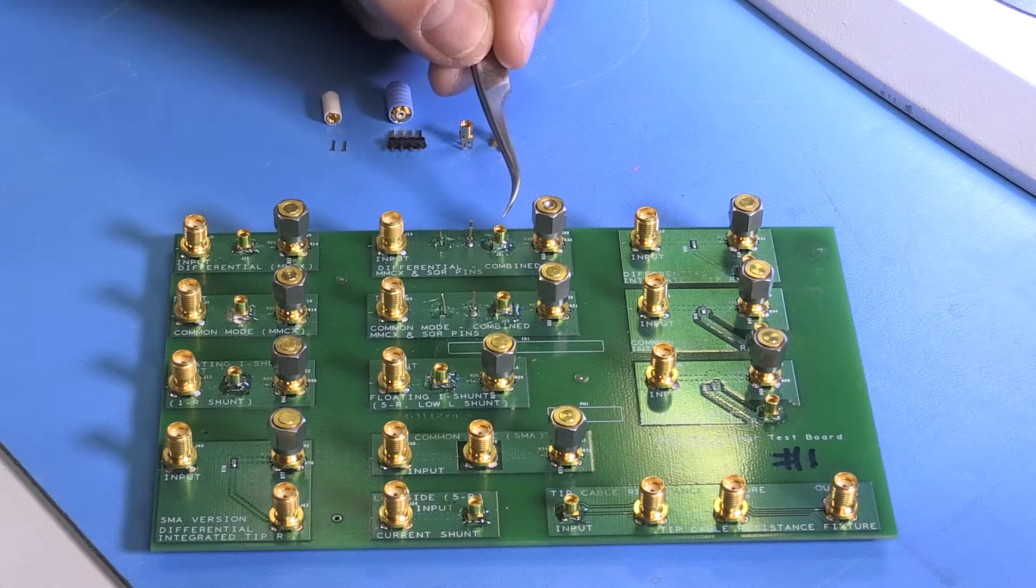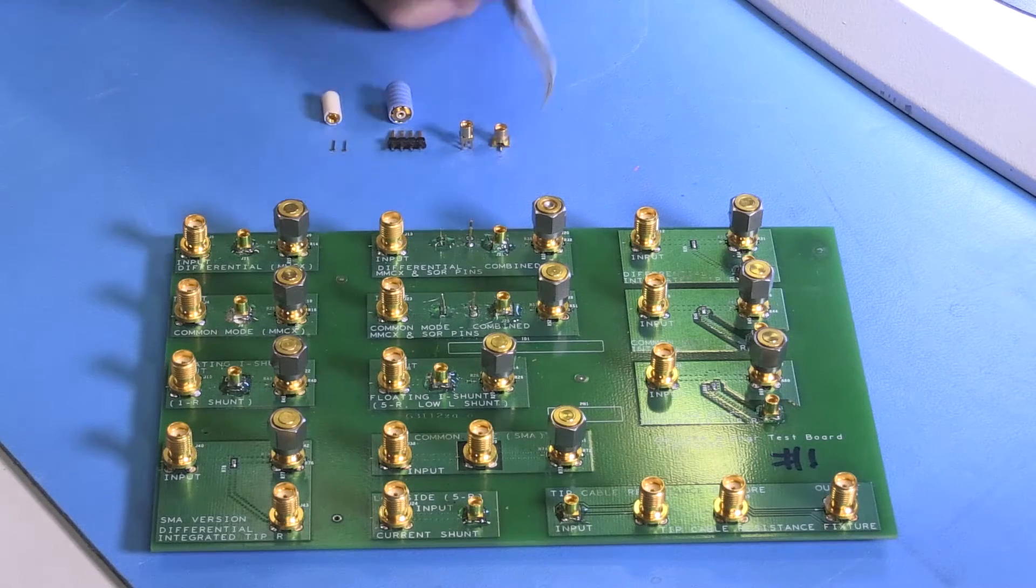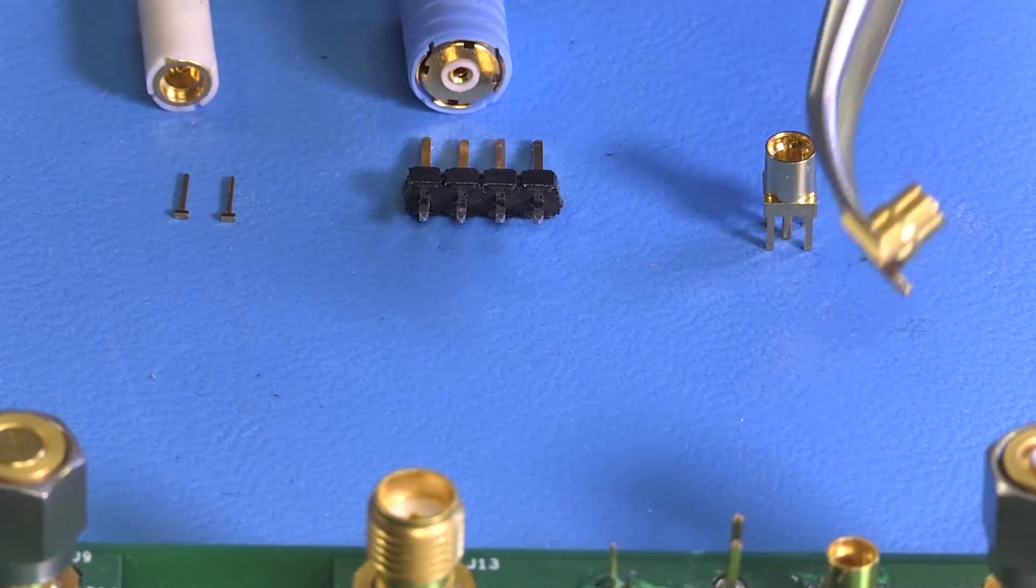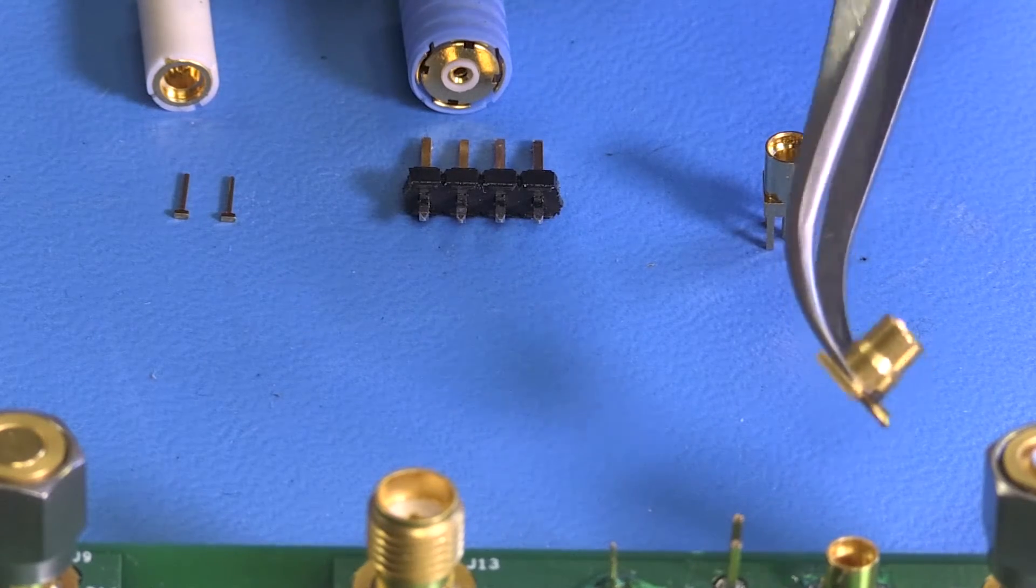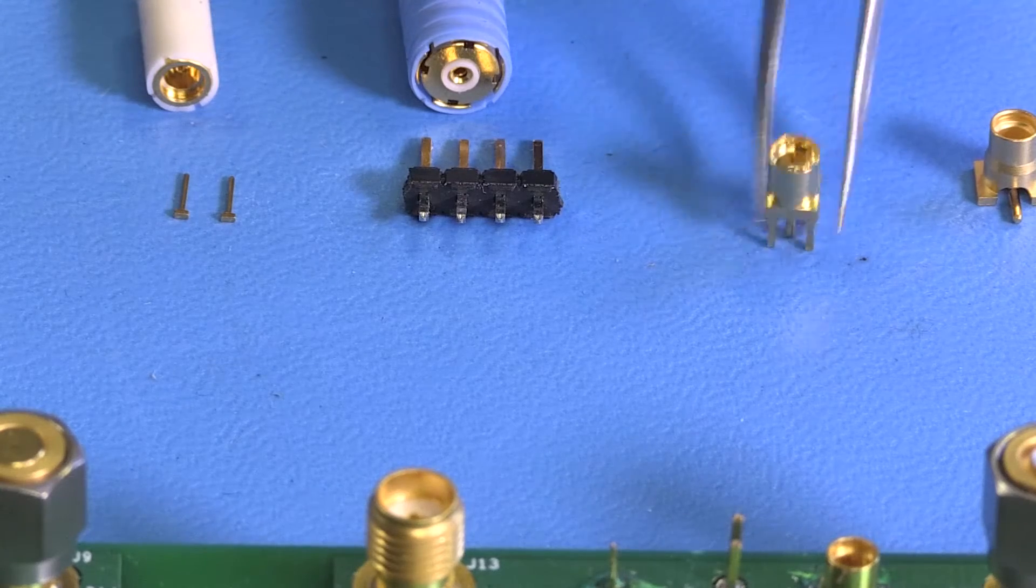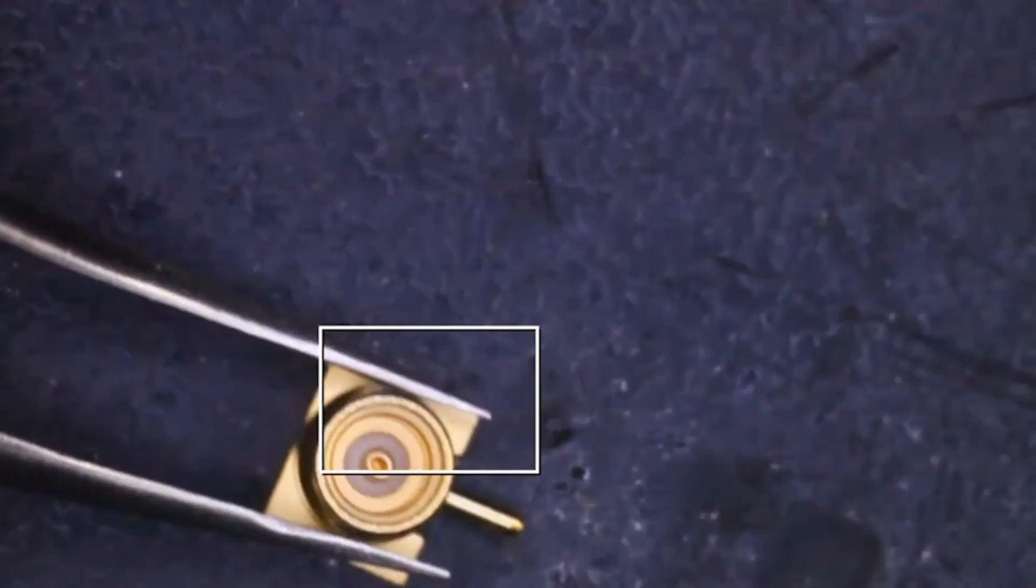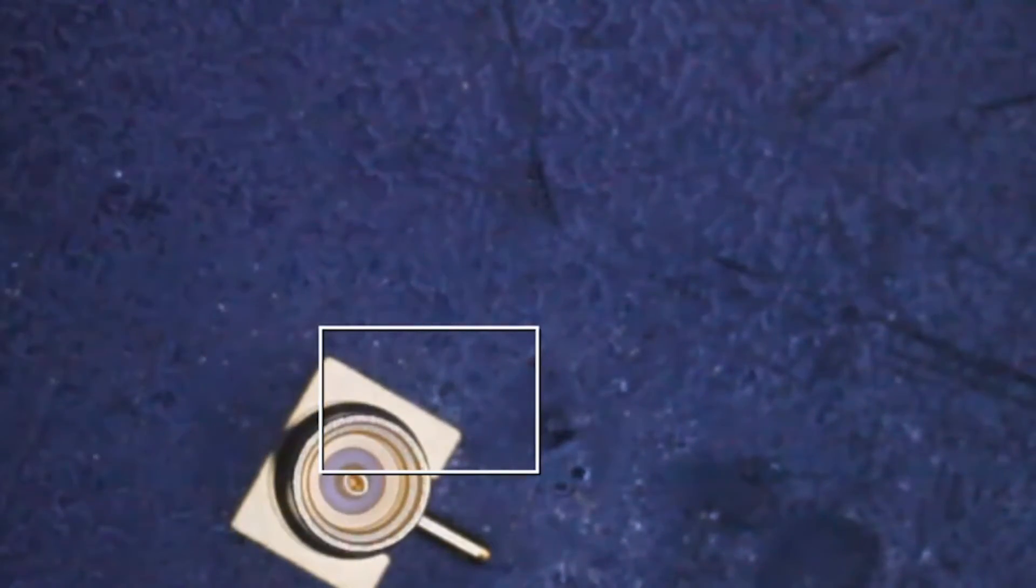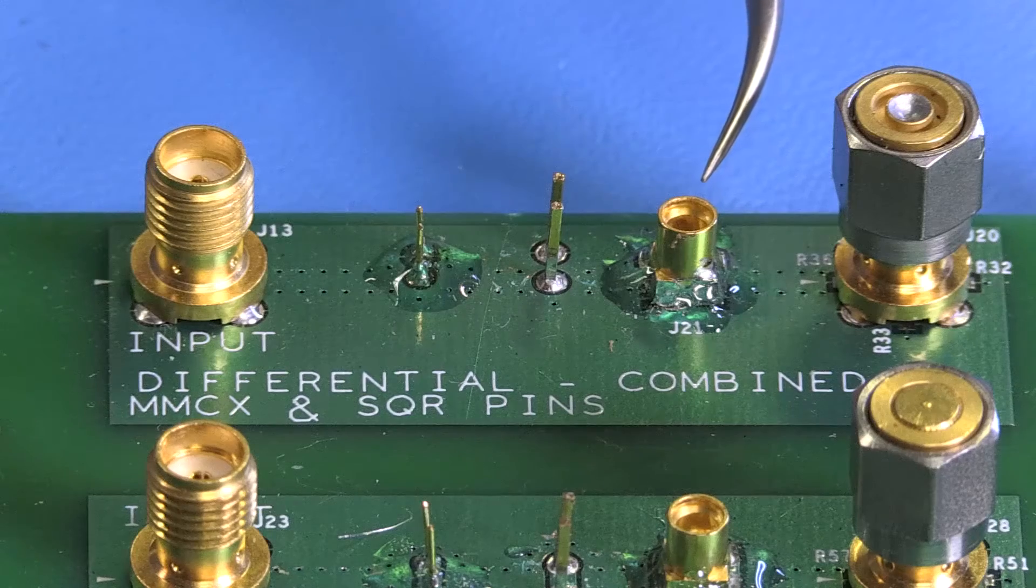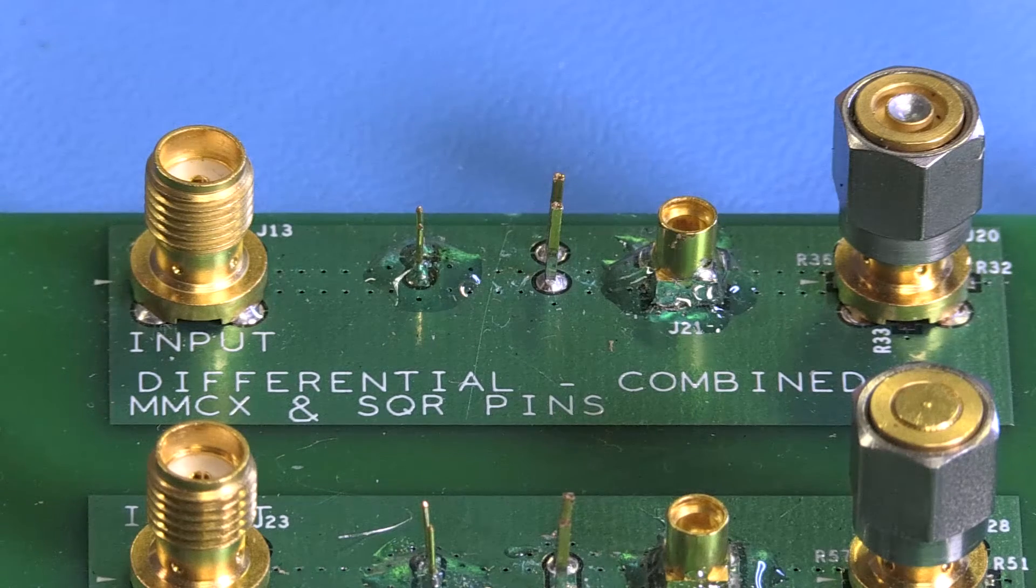We've built this demo board with three different types of connections. The first and highest performance connection method is to design an MMCX connector into your device under test. The MMCX connector is an industry standard connector and is currently available from a number of online retailers at low cost. The MMCX connector has plenty of bandwidth for our application and provides a shielded coaxial environment all the way to the test point, ensuring the highest common mode rejection and the best performance. The best way to use this type of connector is to design it into your test board as a planned test point.